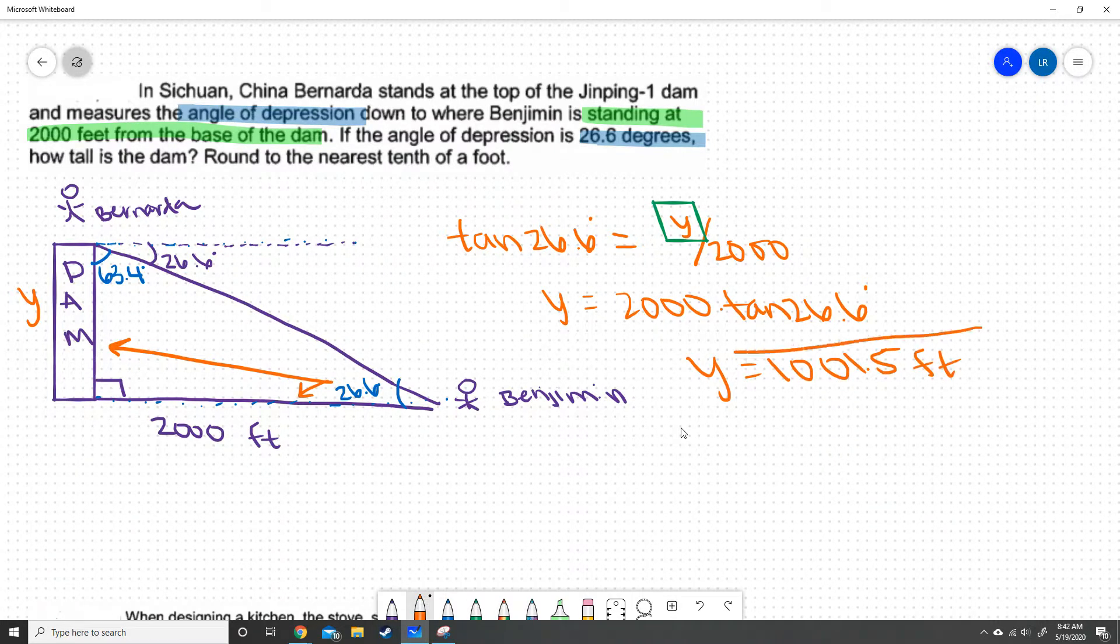So y equals 1,001.5 feet. And make sure you include your units. So we read the question, we drew a diagram, and then we found what trig ratio was going to help us solve for the missing side.